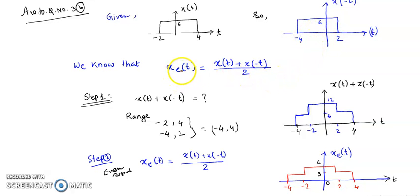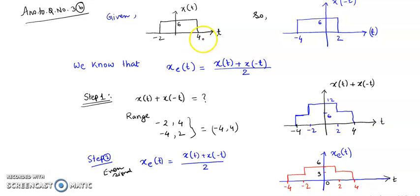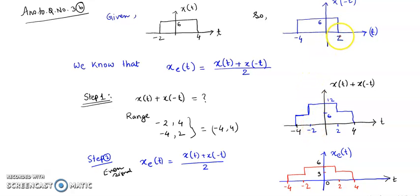To find x_even(t), we add the two signals x(t) and x(minus t). x(t) is defined from minus 2 to 4, and x(minus t) is defined from minus 4 to 2. So in the negative time direction the maximum limit is minus 4, and in the positive time direction the maximum limit is plus 4. The combined signal is defined from minus 4 to plus 4. We identify key time indexes: minus 4, minus 2, plus 2, and plus 4.